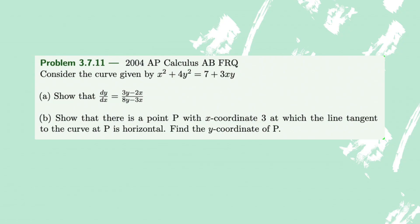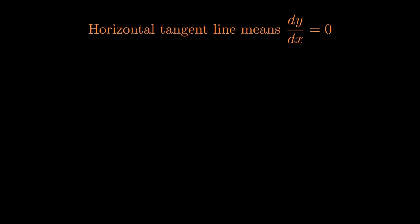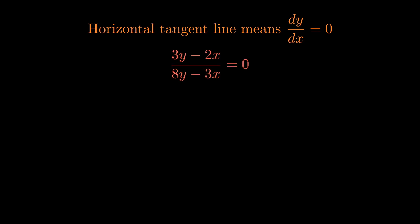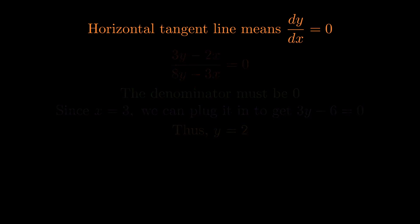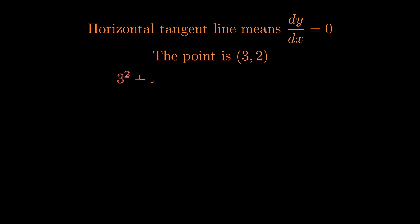Part B asks us to show there is a point P with x-coordinate 3 at which the tangent line to the curve is horizontal, and to find the y-coordinate of P. A horizontal tangent means the slope is zero, so we set dy/dx equal to zero, meaning the numerator (3y−2x) equals zero. Plugging in x=3 gives 3y−6=0, so y=2. Substituting the point (3,2) into the original curve equation confirms both sides equal 25, verifying the horizontal tangent exists.